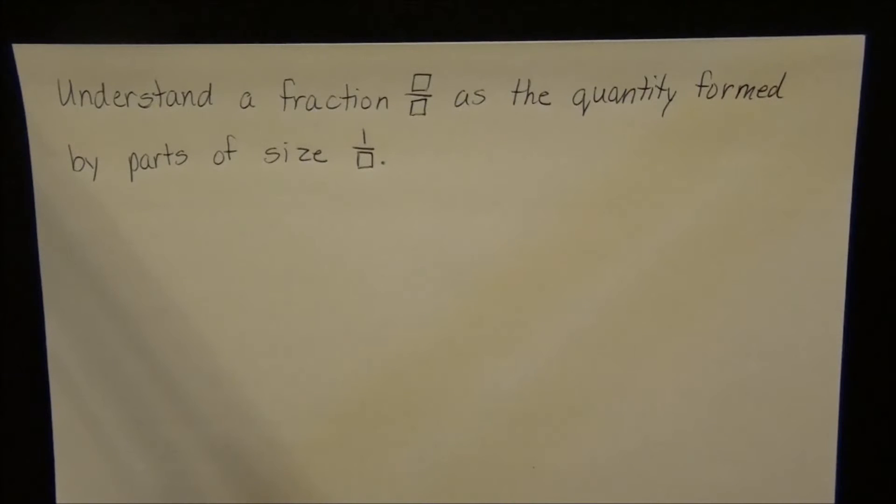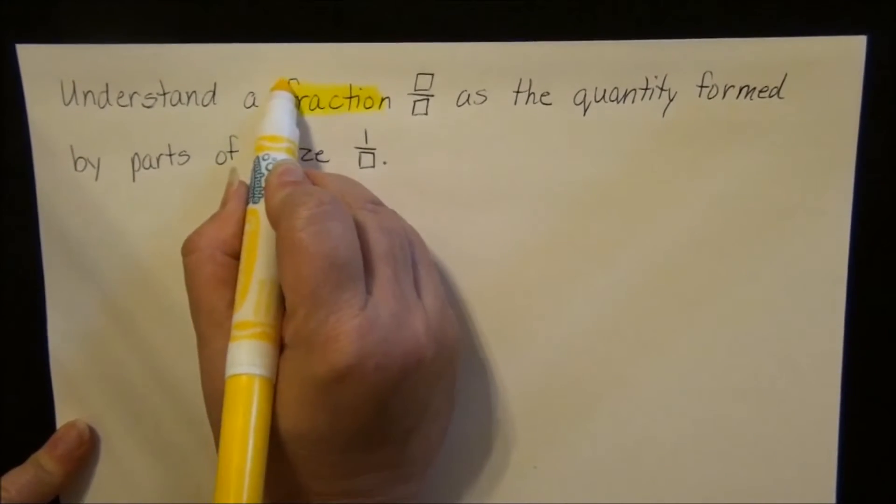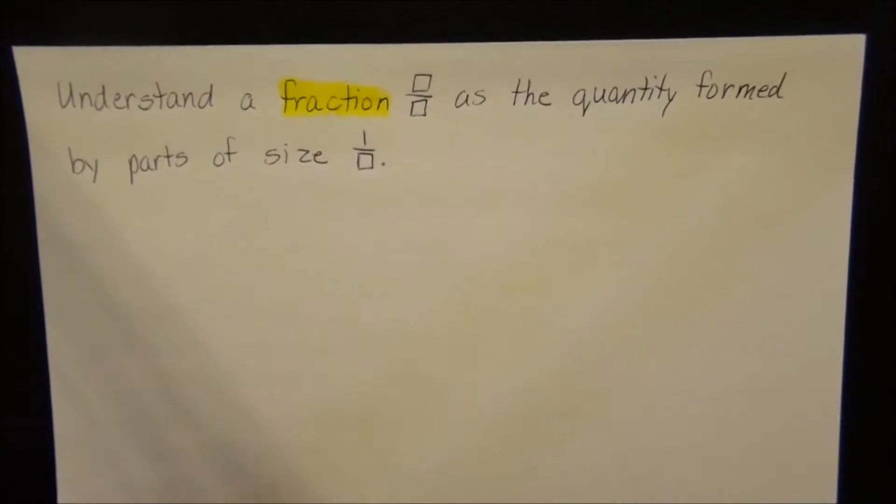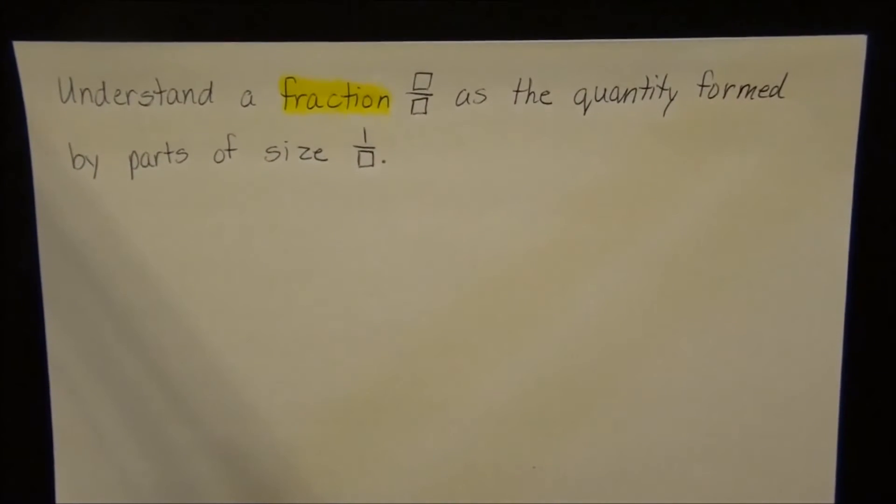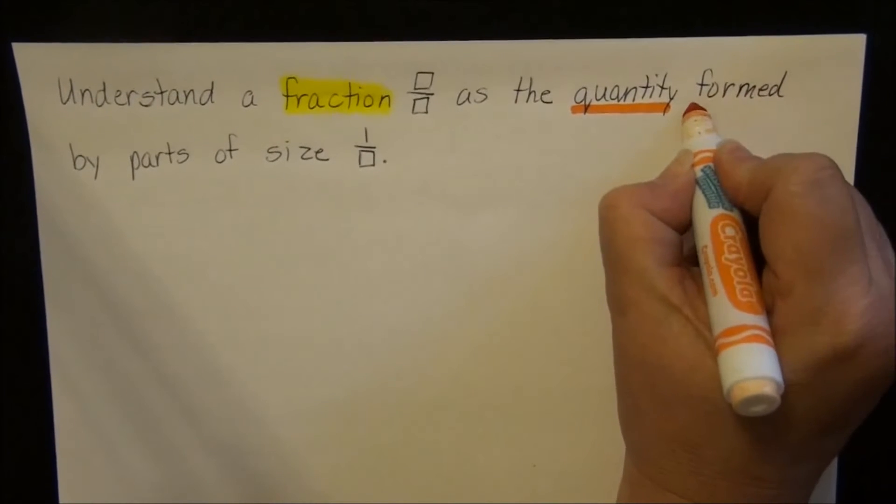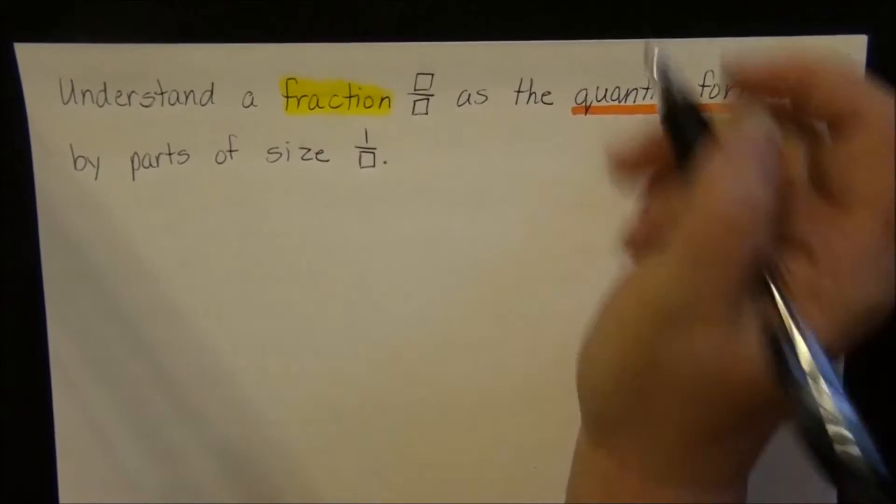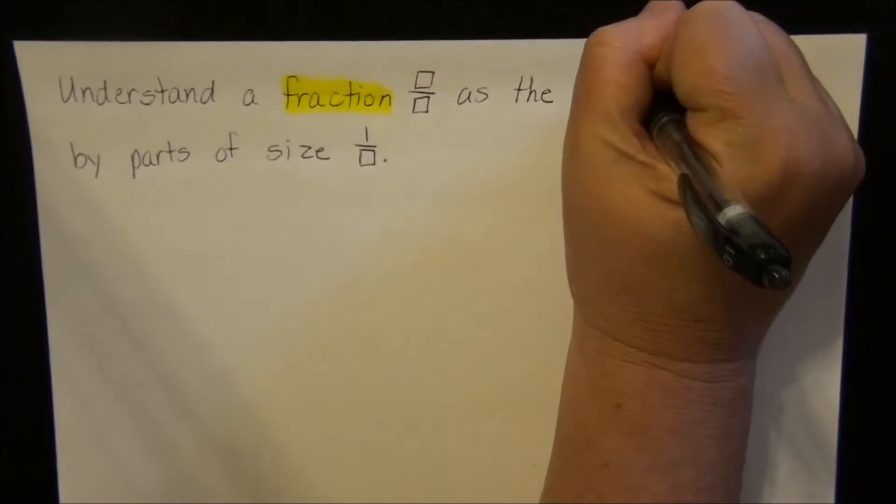Okay, so first of all, we want to look at our vocabulary, our math vocabulary. We have one of those words from the first lesson, which was fraction. And we learned that fractions are those numbers that come between whole numbers. And we had two new math words, quantity and formed. Quantity is the number, and formed means made.